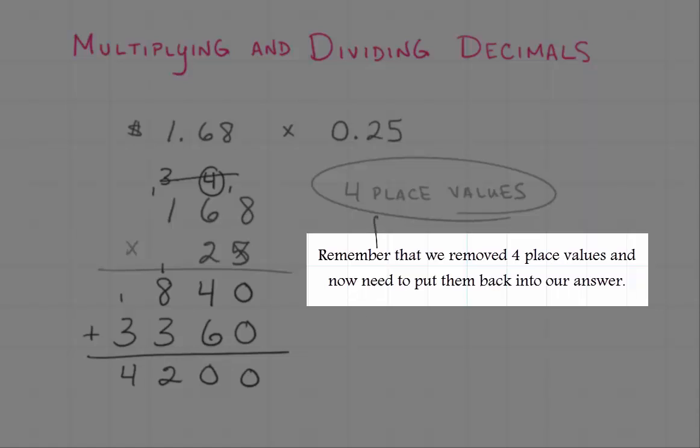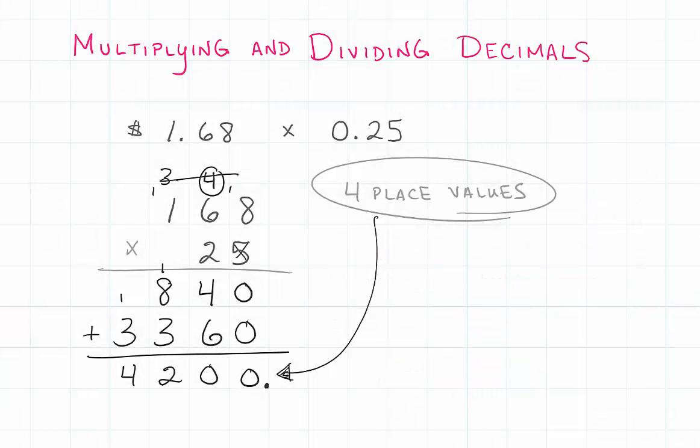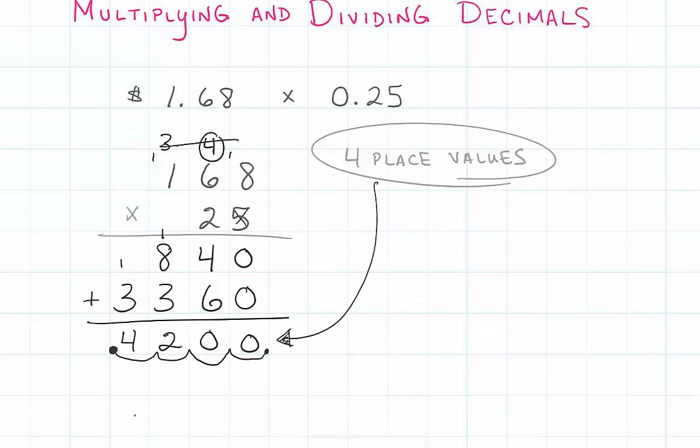Now it looks like 4,200, but I've got to bring my four place values back. The decimal in 4,200 is at the end, so I move it one, two, three, four. Our answer is 0.42. Let's try division.